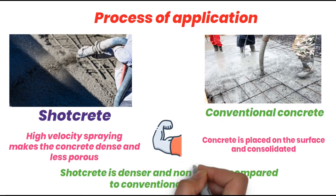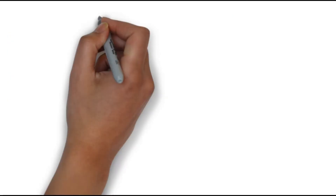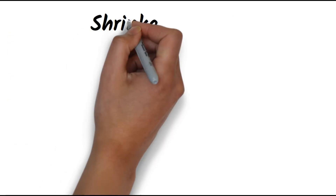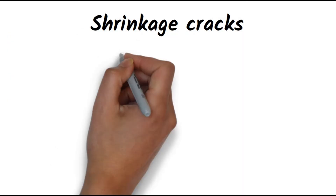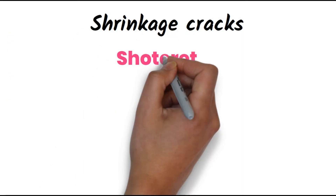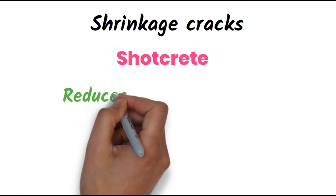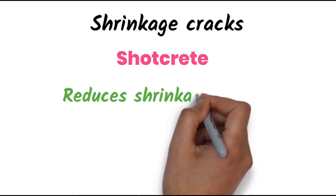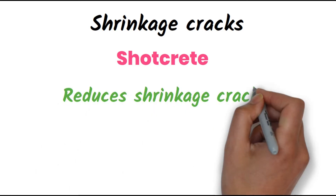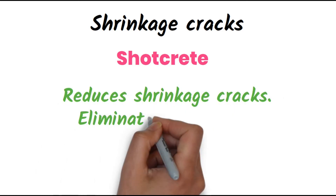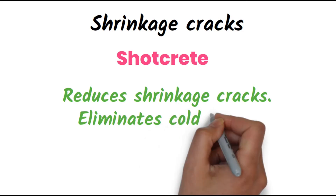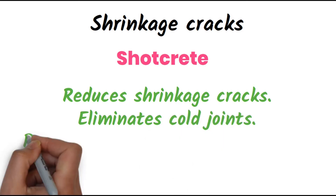Next is shrinkage cracks. In the case of shotcrete, shotcrete reduces shrinkage cracks and eliminates cold joints. It produces an even, non-porous, and dense concrete.